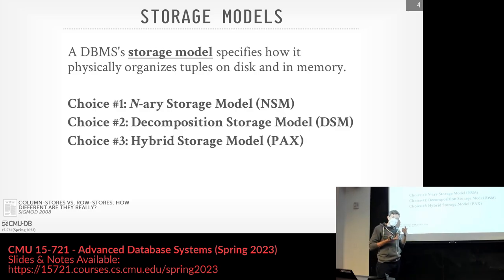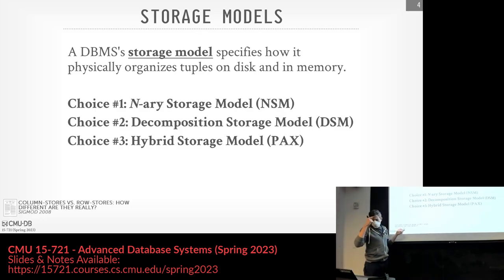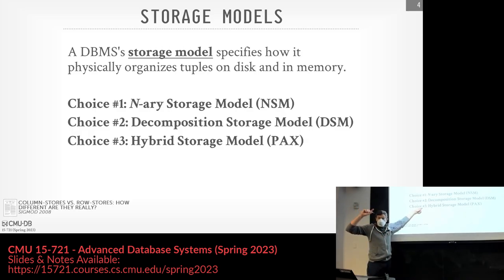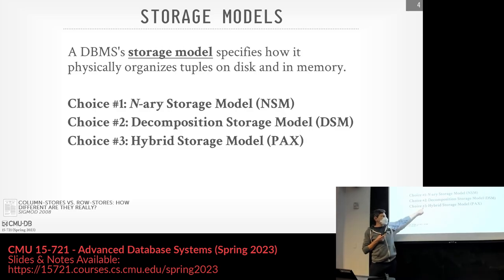The assigned paper from 2006 is the definitive paper on the pros and cons of row store versus column store. They mention PAX but don't go into detail — yet PAX is what Parquet, ORC, and most modern systems actually use. When people say column store today, they usually mean PAX. Most systems that claim to be column stores are actually PAX.